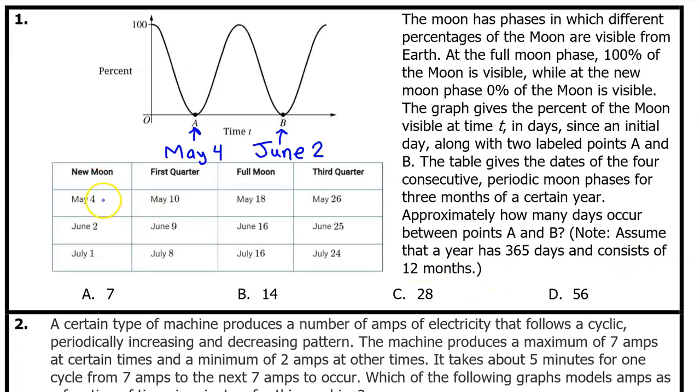According to the chart, there is a new moon at May 4th. That means 0% of the moon will be visible. So point A could be May 4th. And then the next new moon, point B, would be June 2nd. So it's just a matter of how many days is between May 4th and June 2nd.